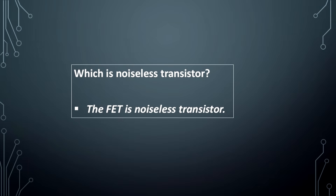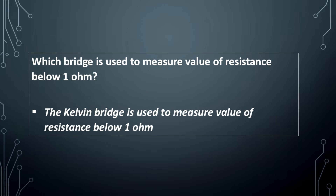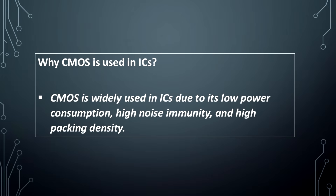Which is the noiseless transistor? The FET is the noiseless transistor. Which bridge is used to measure value of resistance below one ohm? The Kelvin bridge is used to measure value of resistance below one ohm.